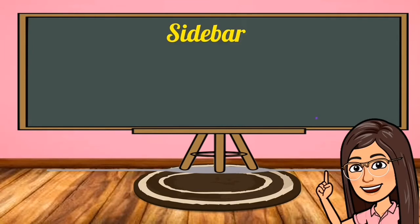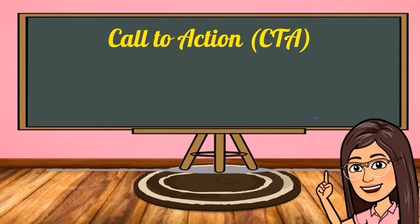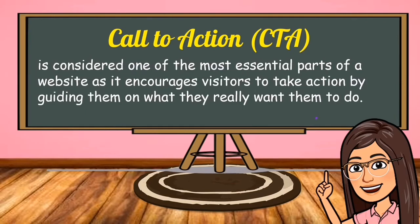Then we have the sidebar. It is the area of the website which displays information that is not part of the page's main content, like a call to action or links to recent blog posts or social media accounts. Then we have CTA, or also known as call to action. It is considered one of the most essential parts of a website as it encourages visitors to take action by guiding them on what they really want them to do.